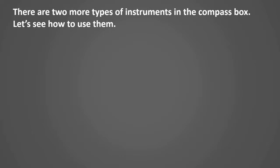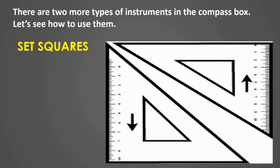There are two more types of instruments in the compass box. The first one is the set square. Set squares come in two usual forms, both right triangles: one with 90°, 45°, 45° angles, and the other with 30°, 60°, 90° angles. Combining both forms by placing the hypotenuse together will always yield 15° and 75° angles.